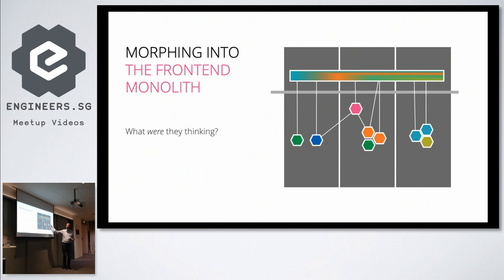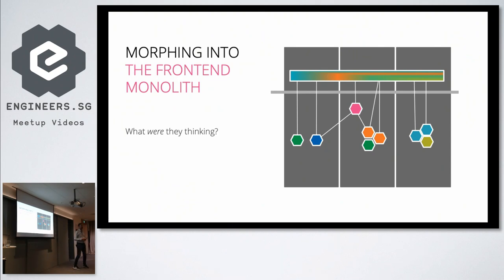Some part of the blue service is smeared across; the orange service is somewhere visible. Each time the middle team wants to release their service, they still have to coordinate because they're working with a monolith. Having microservices on the server and a monolith in the front end is the worst of all worlds. Unfortunately, that happened quite a bit, and it was really unexpected.